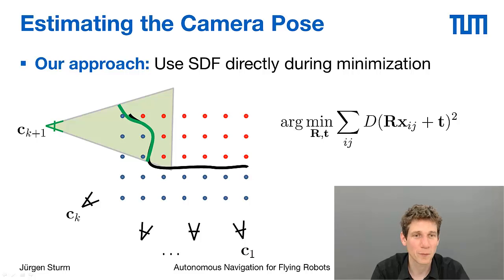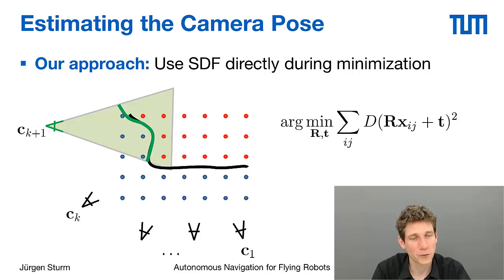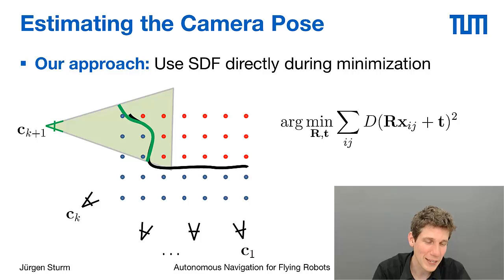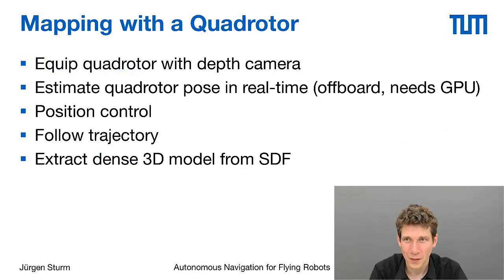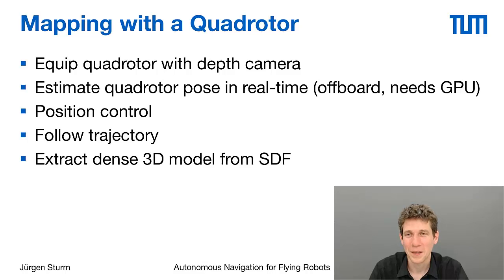When optimizing, remember you want a minimal representation. It makes sense to represent the rotation matrix R as angular velocities, giving only 3 degrees of freedom instead of 9 components of a rotation matrix. With that we can use this concept to perform mapping with a quadrotor.